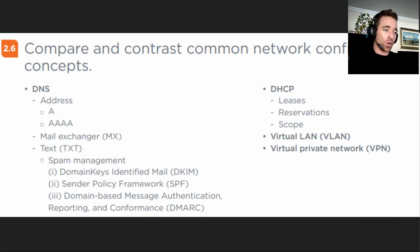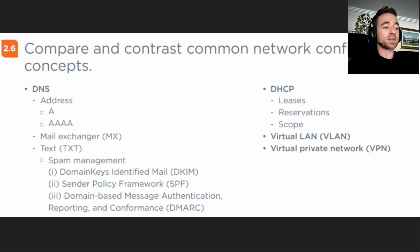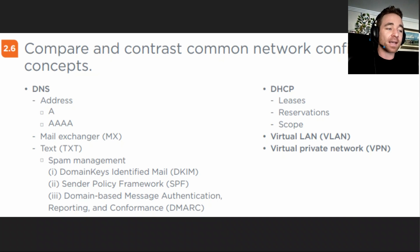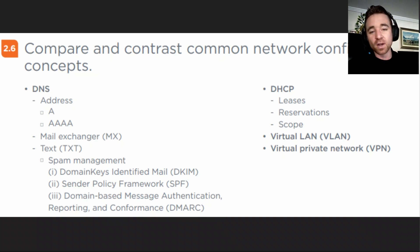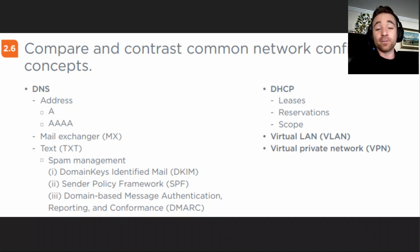After that we'll head over and look at DHCP — what is DHCP, what is a lease, what is a reservation, what is a DHCP scope. And then finally what is a VLAN or virtual local area network, and what is a VPN or virtual private network. So we're going to dive straight into all of that right now by going to our first practice question.